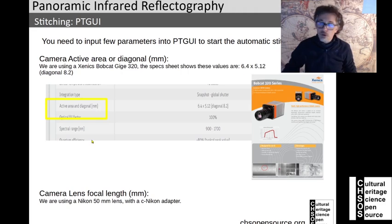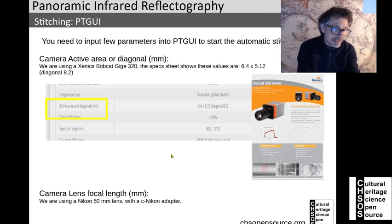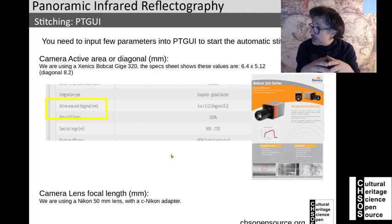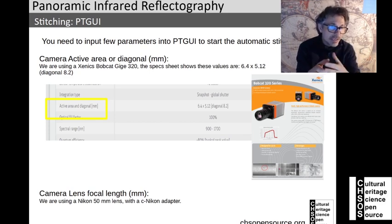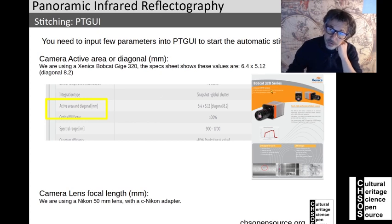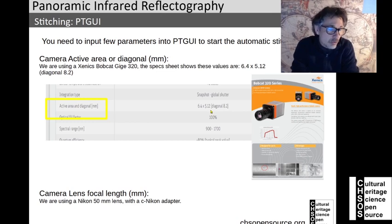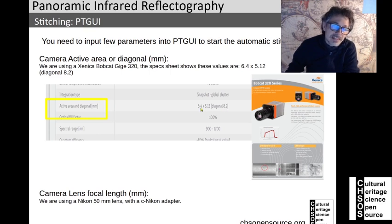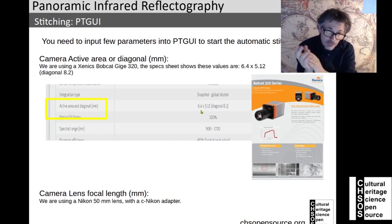The software PTGUI will ask for a few parameters that we need to input. The first parameter is the diagonal or active area of our camera. In this case I used the Bobcat 320, and from the spec sheets we find that the diagonal is 8.2 mm and the sensor size is 6.4 by 5.12 mm.